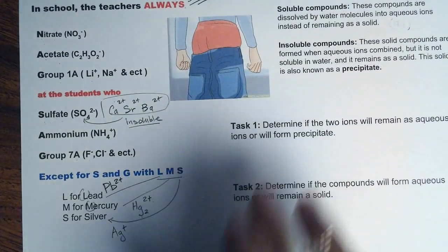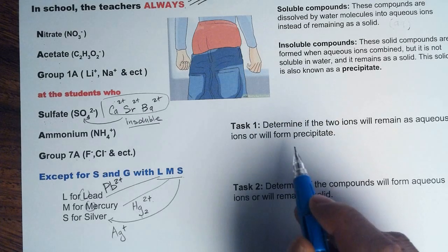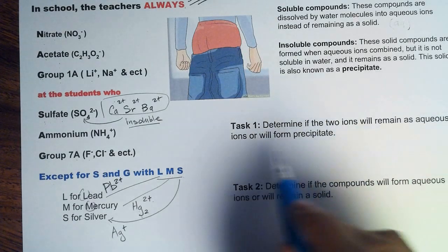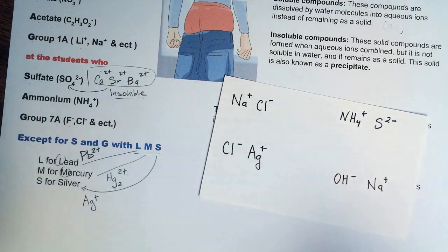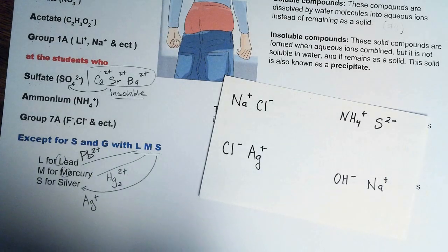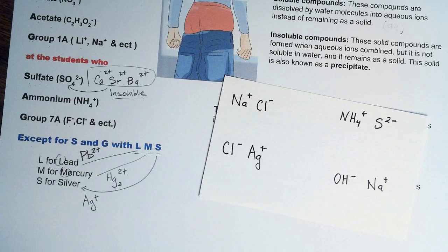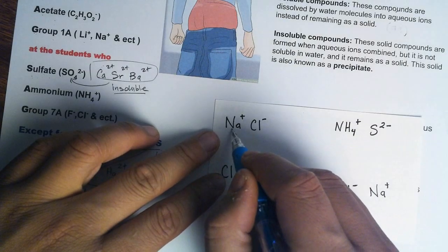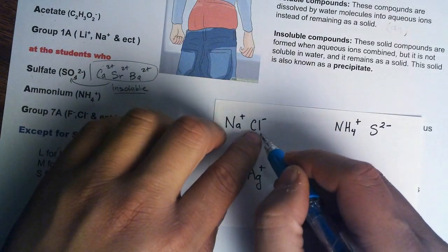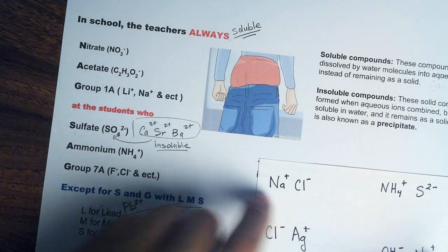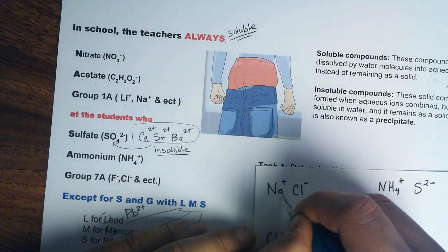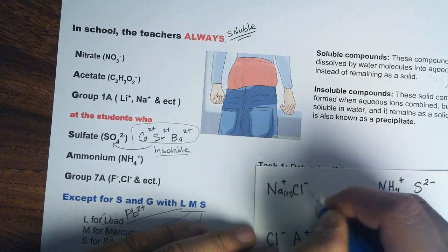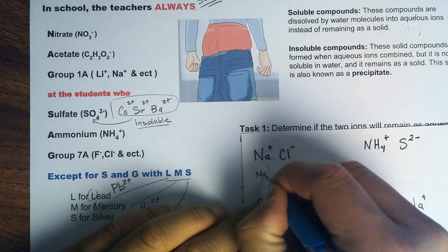Now let's look at Task 1. We look at two ions to determine if they will remain as aqueous ions or will form a precipitate. Now we have two solutions that contain two separate ions and we mix them together — will these ions combine to make a solid or remain as ions? In this case, we have sodium aqueous and chloride aqueous. Based on the solubility rules, any element with Group 1A will remain soluble, so they will remain as aqueous ions.